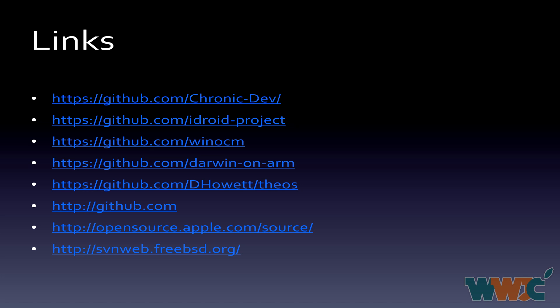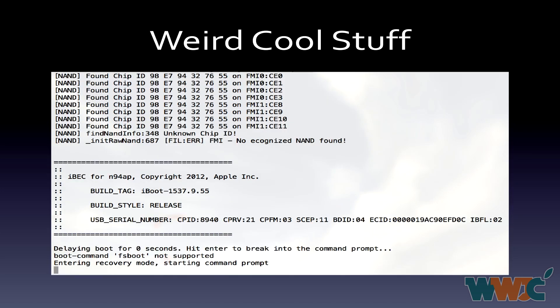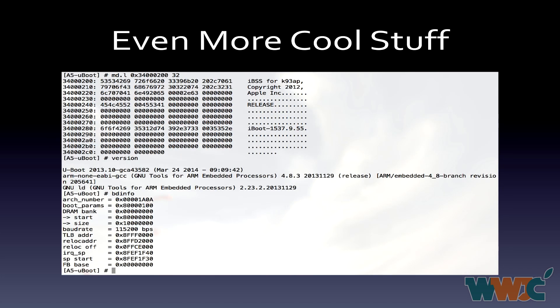Looking at the demo slides: you can see IBSS for K93AP — the fun fact is if you look at the BDID, it's 08, meaning that's an iPhone 4S running the iPad 2 IBSS, and it just works except for the display. The next slide shows IBEC for N94AP running on an iPad 2. These are both powered by KLoader, which allows you to execute arbitrary ARM images on all sorts of Apple devices. Another slide shows U-Boot dumping memory from RAM at 0x3400, which is the SRAM base where LLB and IBS are loaded.